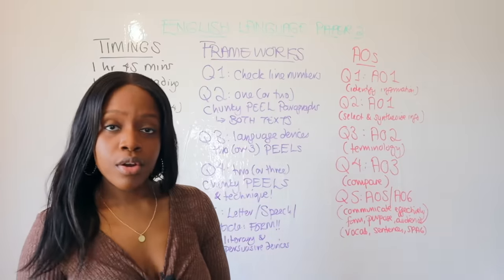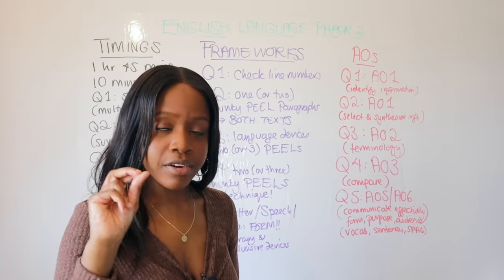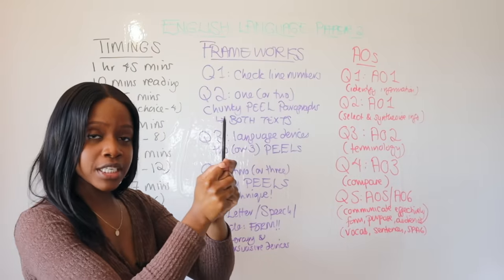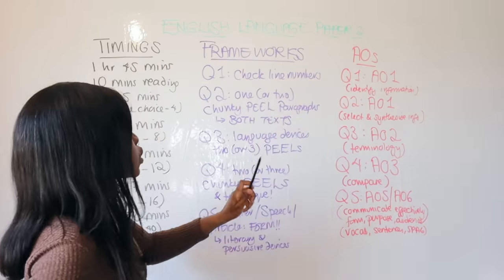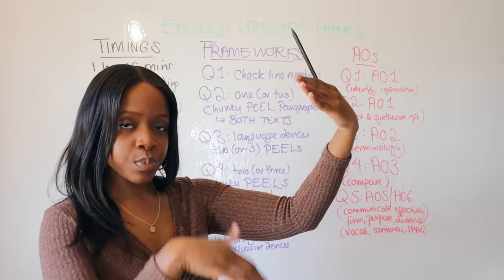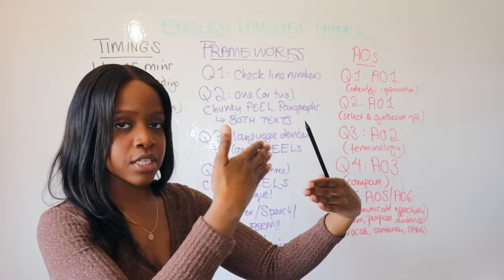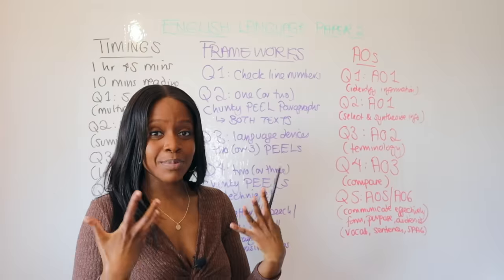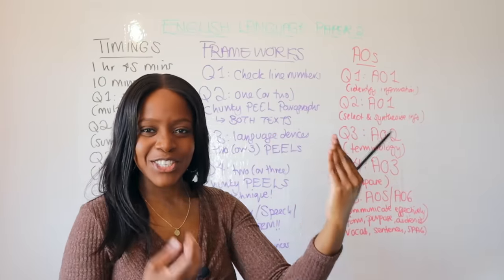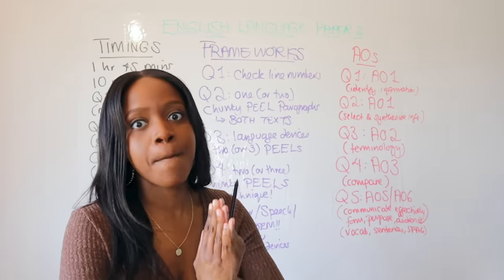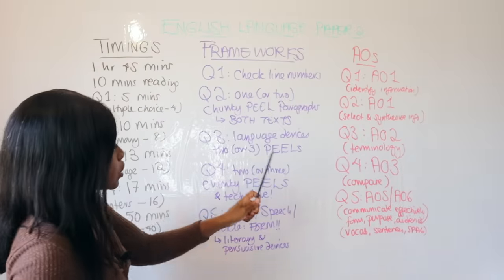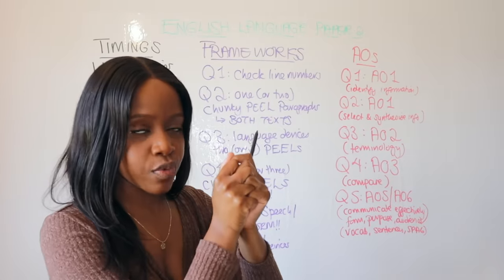For Question Two, the summary question, you summarise either similarities or differences between both texts. You don't need to discuss techniques, but you must integrate your comparison. Aim to write at least one chunky PEEL paragraph — Point, Evidence, Explanation, Link — covering Source A and Source B together. If you're fast enough, aim for two PEEL paragraphs within those 10 minutes, then move on.